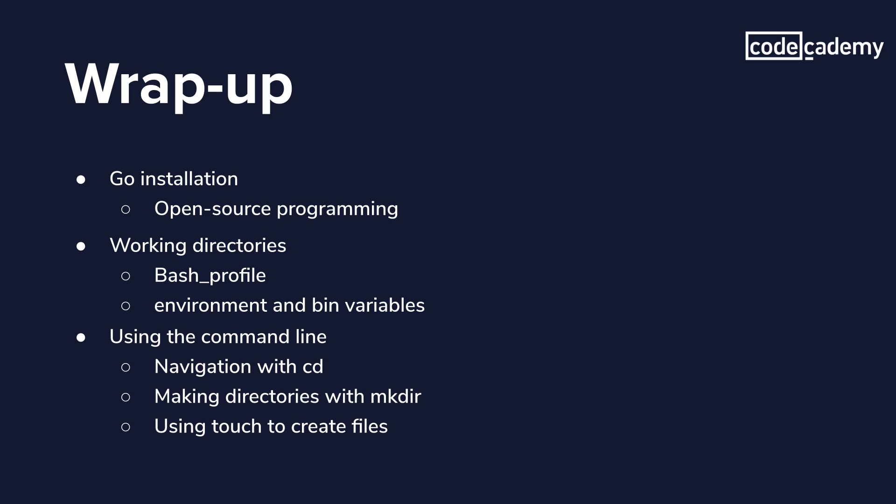We've covered quite a few things today. First, we downloaded Go from online and talked about how it is an open source programming language, which is free for us to use and is open to contributions from the community. We then set up our Go working directory and modified our bash profile, covering how we need to set up our environment and bin variables in order to properly run Go code. In order to modify and set up our working directories, we used a number of command line tools, including moving through directories with the change directory command, making new directories with the make directory command, and creating new files with the touch command. Happy coding!